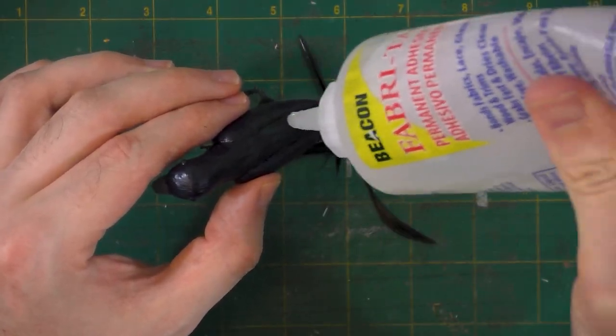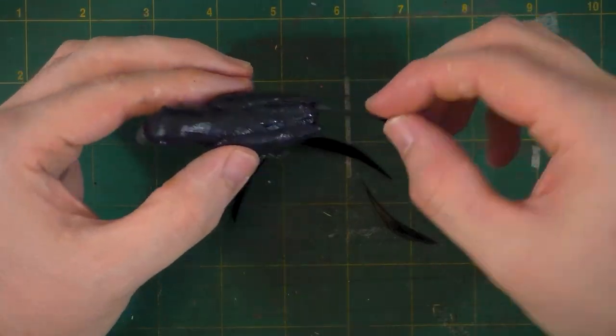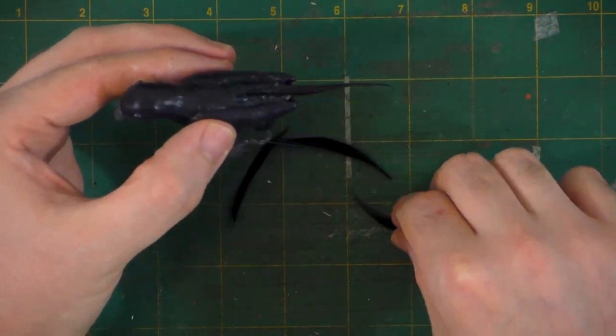And now's the part that I teased about earlier. I'm going to take some fabric tack and attach these black feathers that I had around the house, as one does, to form a tail.